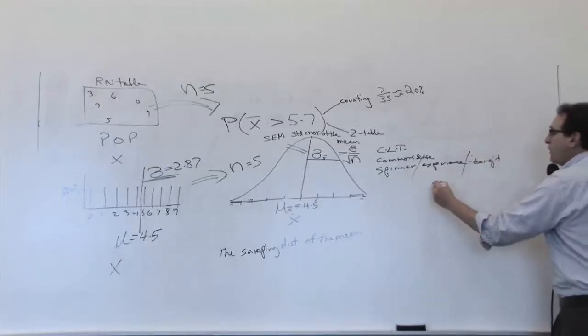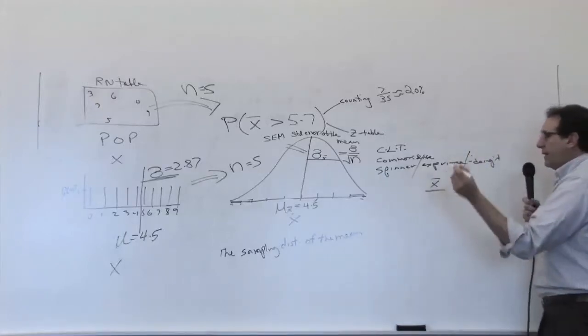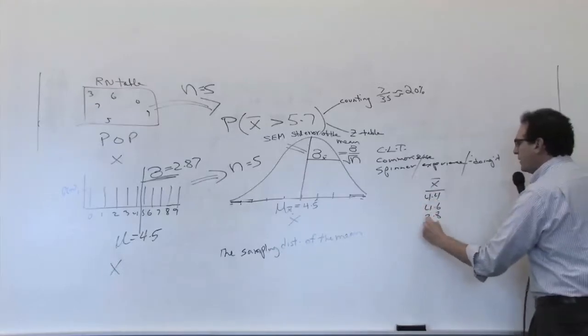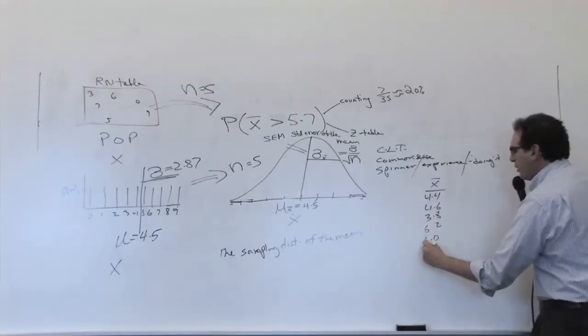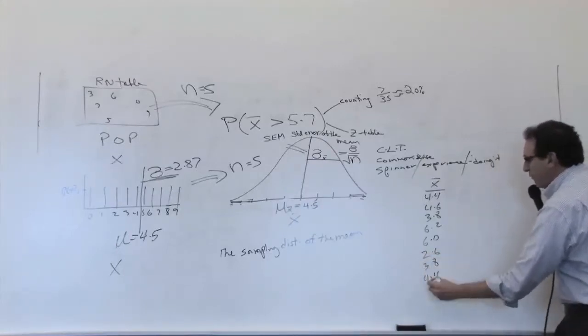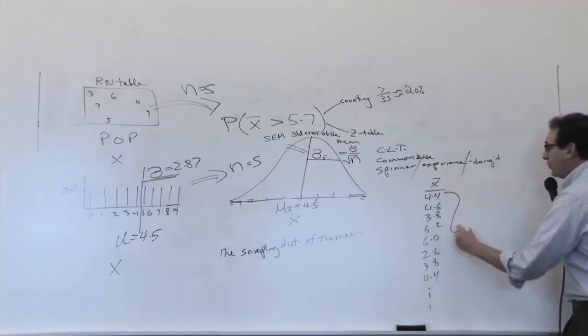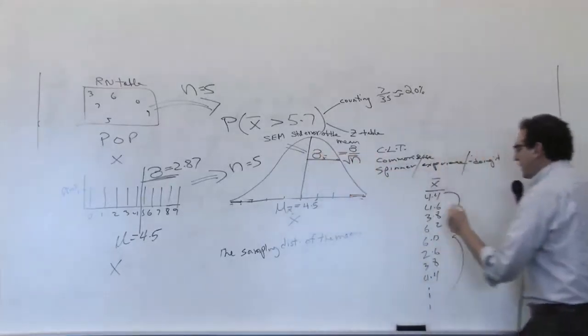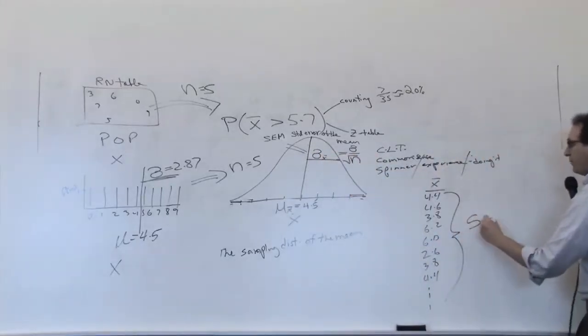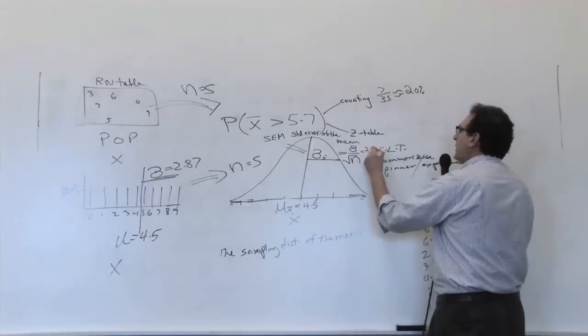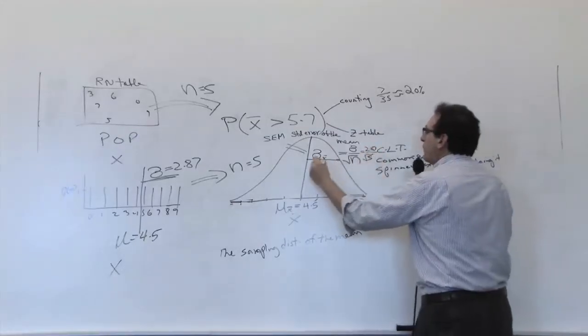It says, if you have a whole bunch of averages, like Nakia had, I think, 4.4 and 4.6 and 3.8 and 6.2 and 6.0 and 2.6 and 3.8 and 4.4, if you do this a thousand times and measure the spread among these numbers. Remember, the standard deviation represents the spread. What is the spread among the averages? Well, I told you to do it two ways. I told you to do it by taking 2.87 over root 5, and this comes out to 1.28.